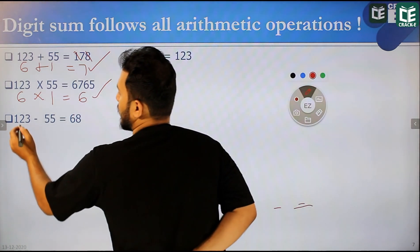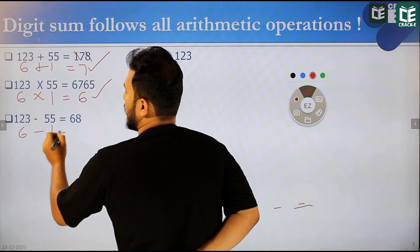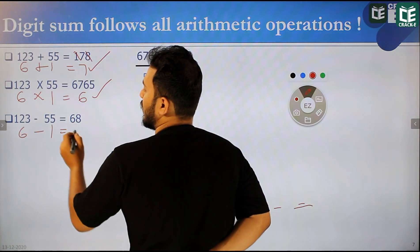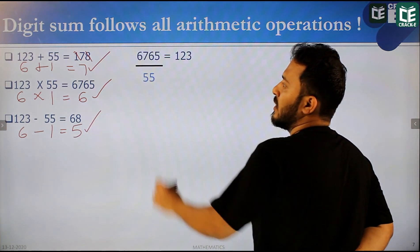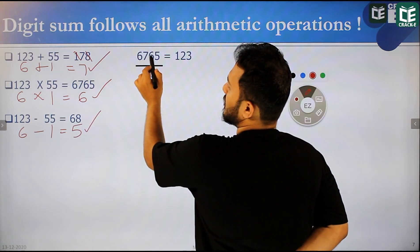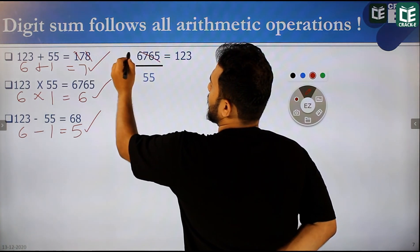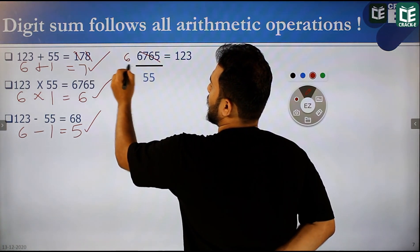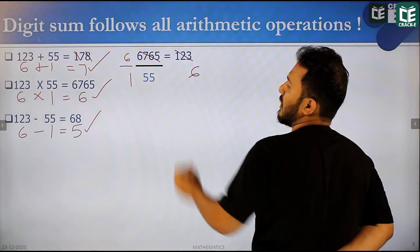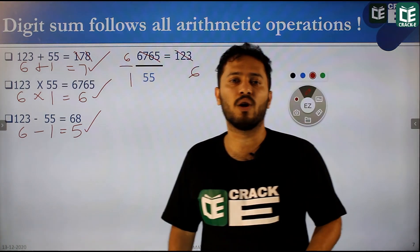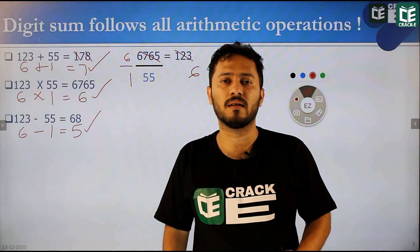This is subtraction: 6 minus 1. Then 6 plus 8 is 14, 14 digit sum is 5. Subtraction is valid. Then 6 plus 7 is 6 — same result. We say 5 and 6 is 6, and 2 equals the same.